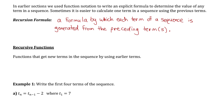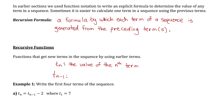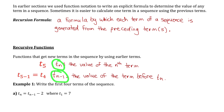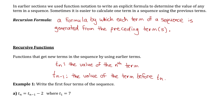In a recursion formula, you're always going to see two things: tn and tn-1, where tn just means the value of the nth term, which would make t sub n-1 the value of the term before term n. So for example, if n was 5, this would be the value of the 5th term, and this would be the value of the 4th term. I'll often refer to tn-1 as the previous term because it's the term before term n.